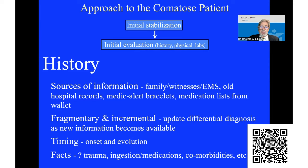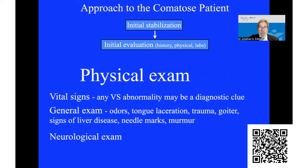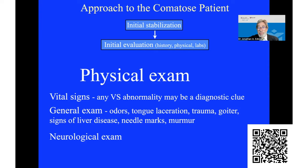Other things to ask: is there any evidence for trauma? Is there any evidence for ingestions or accidental over-medication? What comorbidities does the patient have? The physical exam is also helpful. Vital signs — if a patient has a fever, is hypothermic, or is extremely hyper- or hypotensive, or tachycardic or bradycardic, those might be important clues. The general physical exam may show odors like uremia, a tongue laceration if the patient had a seizure, evidence of head trauma, a goiter, cutaneous signs of liver disease, needle marks suggesting opioid overdose, or a heart murmur suggesting a cardiac cause.